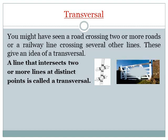Another real life example: these are four line segments — one, two, three, four. This one line segment intersects all four line segments at four different points — first point, second point, third point, fourth point. So this is an example of a transversal.